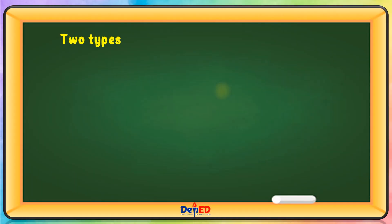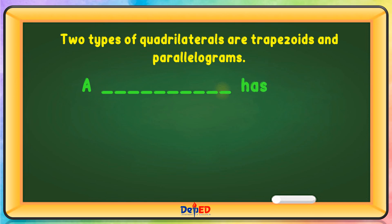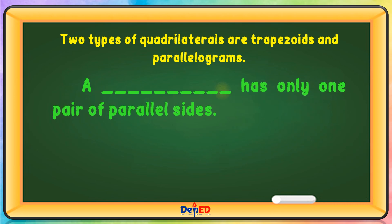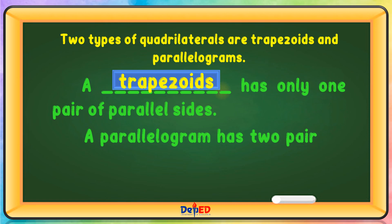Two types of quadrilaterals are trapezoid and parallelograms. A trapezoid has only one pair of parallel sides. A parallelogram has two pairs of parallel sides.